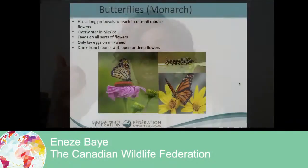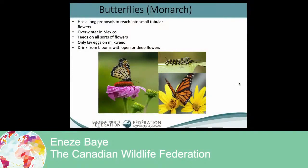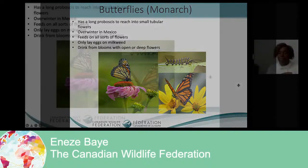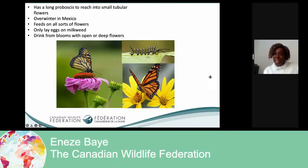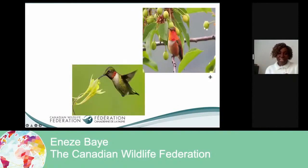The next pollinator is the butterfly. Everybody loves butterflies — they're so beautiful. This particular butterfly is a monarch. The monarch butterfly feeds on all sorts of flowers, and they like flowers that are open or deep. They have a long tongue so they can drink nectar for their nutrients. Did you know that butterflies like the monarch travel all the way to Mexico and overwinter there? That's pretty far away.